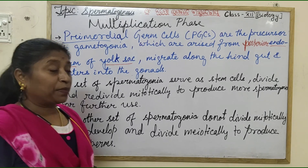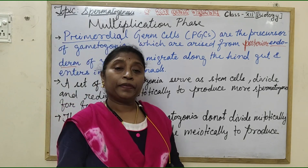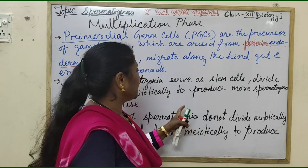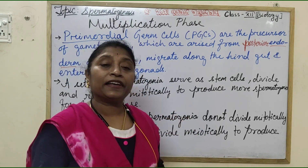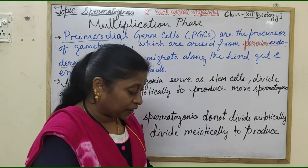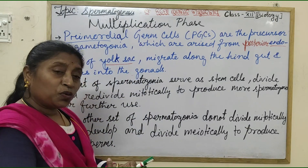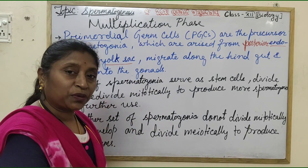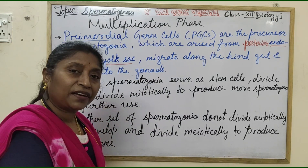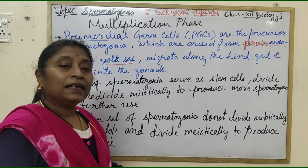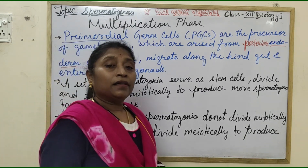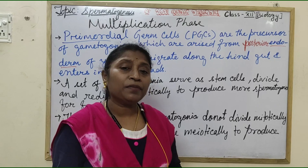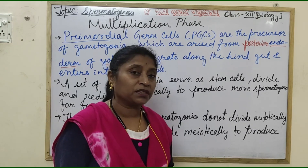A set of spermatogonia behaves like stem cells and divides mitotically to maintain a reservoir of spermatogonia for further use. Whereas the other set divides only meiotically — they develop and divide meiotically to produce the sperms.